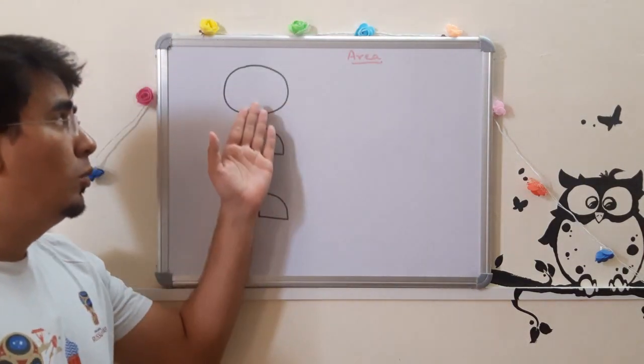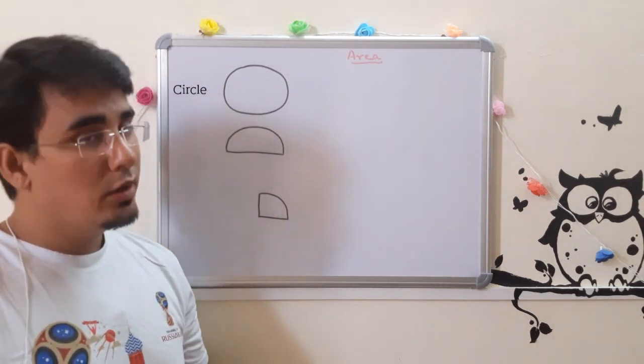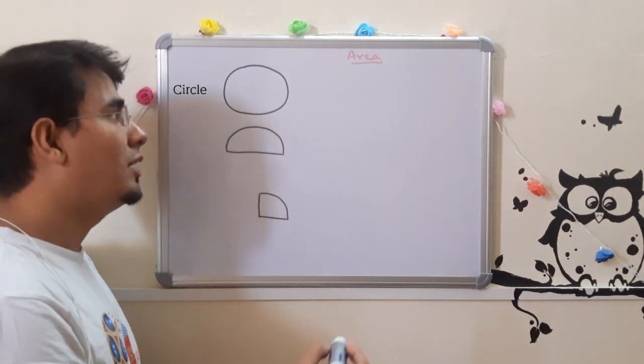Let us recall what is this shape? Circle. You know this. So what is the formula? It is very simple: π r².